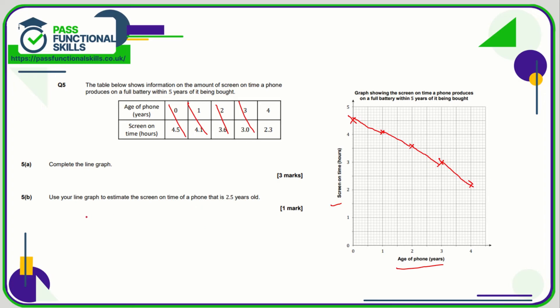Use your line graph to estimate the screen on time of a phone that is two and a half years old. So what we're supposed to do is go to two and a half and just take a reading from here. However, we can use the tables here as well. Two and a half years is exactly halfway between two and three, so we'd expect it to be halfway between 3 and 3.6 which is 3.3. And as we go up to here that does give us a reading which is approximately 3.3. Perhaps would have been closer to 3.3 if I'd actually used the ruler there.